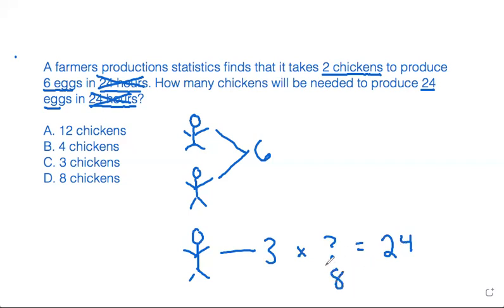So that means we would need eight chickens to produce 24 eggs in 24 hours.